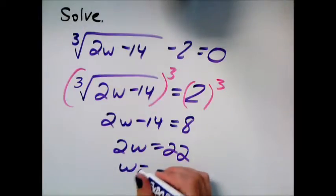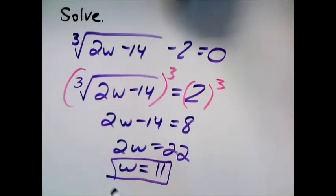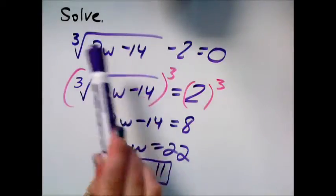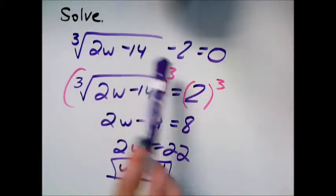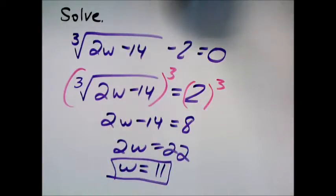And divide both sides by 2, so it looks like w equals 11. It's a good idea to put it back in our original equation and check. 22 minus 14 gives us 8, so the third root of 8 is 2, and 2 minus 2 is 0. You can even check it in your calculator.